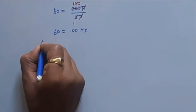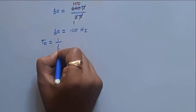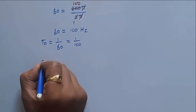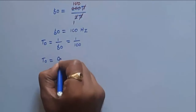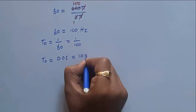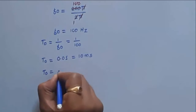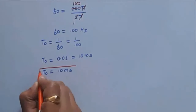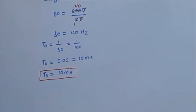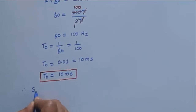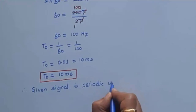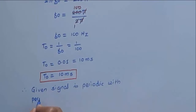We know that the fundamental period of a signal is the reciprocal of fundamental frequency f0. Therefore, T0 is equal to 1 upon 100, which is 0.01 second, or 10 milliseconds. As the given signal has time period T0 = 10 milliseconds, we can say that the given signal is periodic with period T0 = 10 milliseconds.